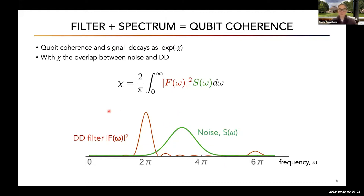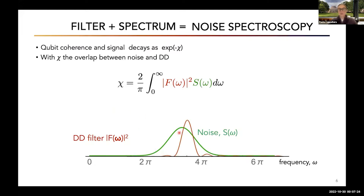Looking at these control sequences in the frequency domain, they look like a filter at the frequency corresponding to the pulse spacing. The coherence time depends on the overlap of your filter function with the noise spectrum. If the two are far apart, the decay is very slow. By sweeping the timing between pulses, we can reconstruct the whole noise spectrum — performing noise spectroscopy using these same tools.